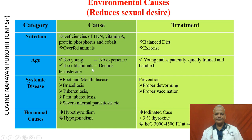Age factors — too young or too old animals — can also cause problems. Systemic diseases such as foot and mouth disease, brucellosis, tuberculosis, paratuberculosis, and severe internal parasitosis can result in poor libido in the bull. Hormonal causes include hypothyroidism and hypogonadism, requiring therapy including thyroxine at 3%, iodinated casein, or treatment of hypogonadism.